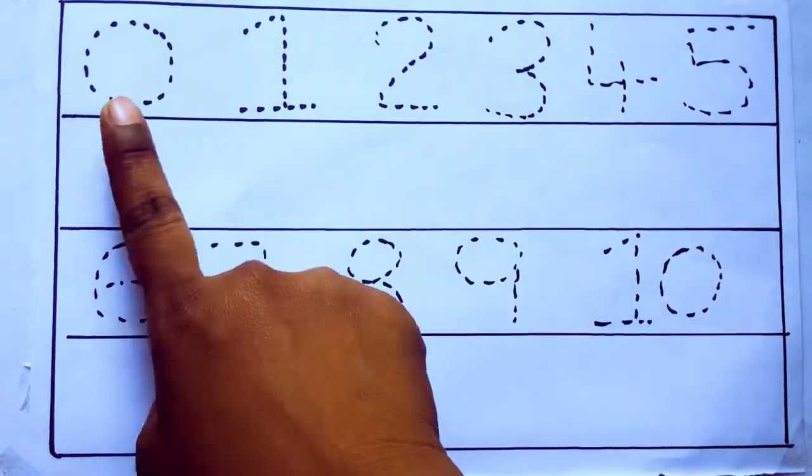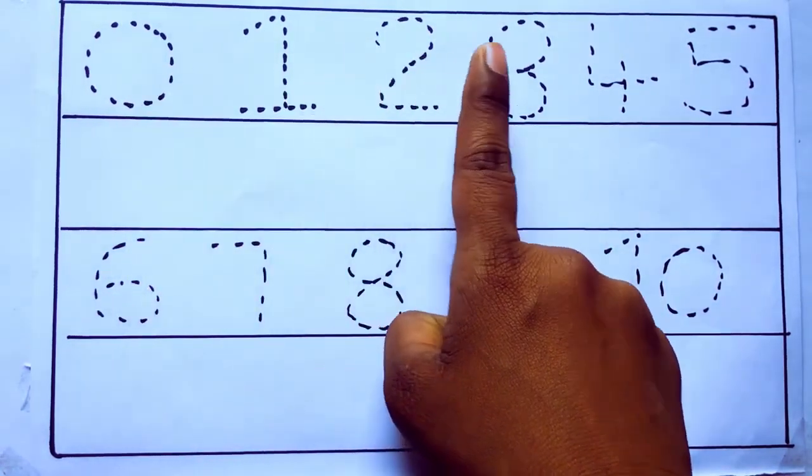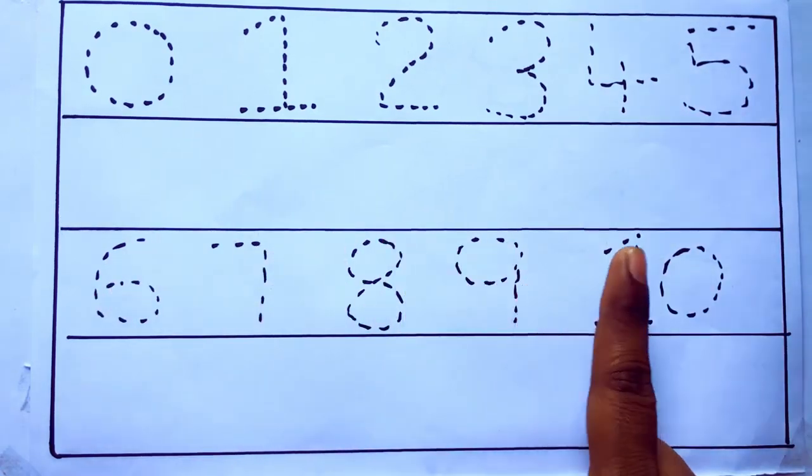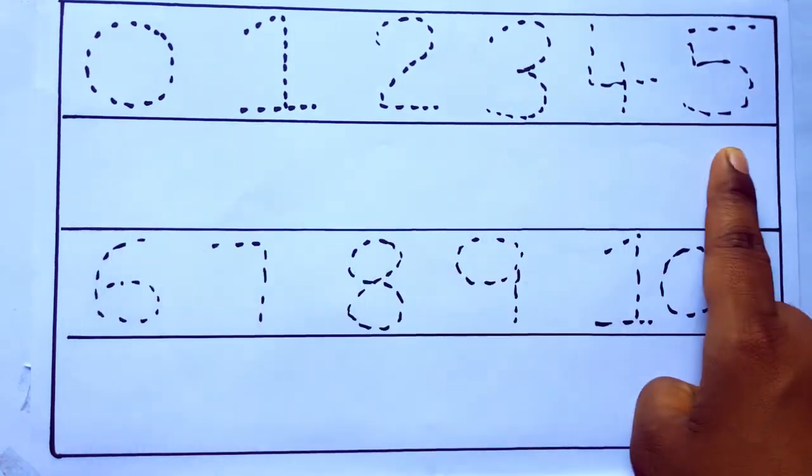0 to 10: 0, 1, 2, 3, 4, 5, 6, 7, 8, 9, 10, and rewriting the numbers.